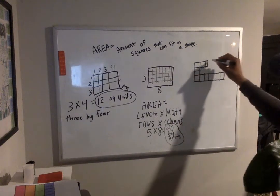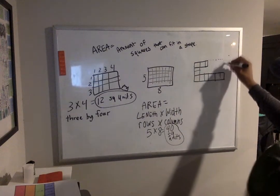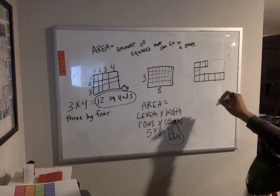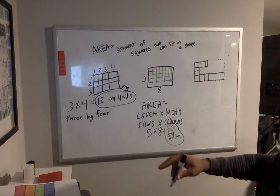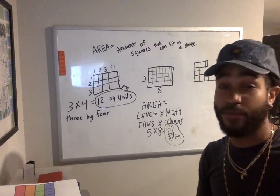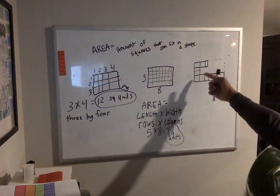As you can see, this rectangle is supposed to be completed, but it's not. But we have enough information. We have the length and we have the width. Check it out.